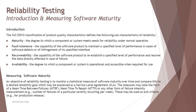The ISO 25010 classification of product quality characteristics defines the following sub-characteristics of reliability: maturity, fault tolerance, recoverability, and availability. Maturity is about how reliable the software is when you use it. Fault tolerance is the capability of the software product to maintain a specified level of performance even in cases of software defects. Recoverability means that no matter what goes wrong, it will recover automatically to resume work. Availability stands for the degree to which a component or system is operational and accessible when required — such as 24/7 or maybe 9 to 6.